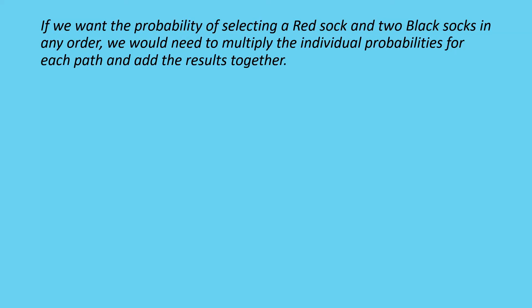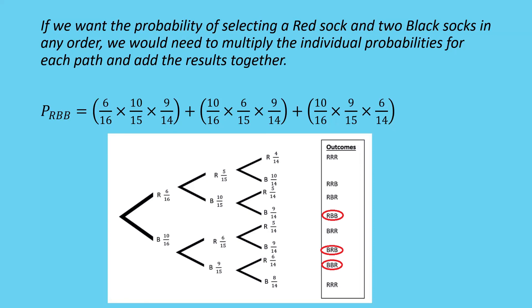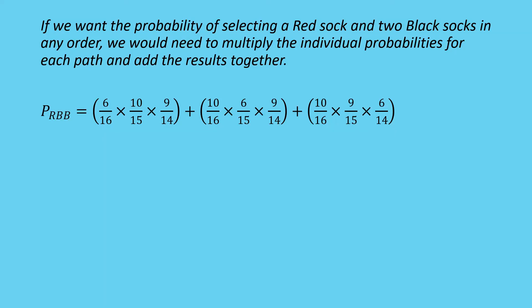For one red and two black socks without replacement, we look at all three paths. Path one: red then black then black — 6/16 × 10/15 × 9/14. Path two: black then red then black. Path three: black then black then red. Multiplying all the individual probabilities for each path gives 27/56 total, or about 48.21%. This does get complicated, but it's a far more realistic situation.